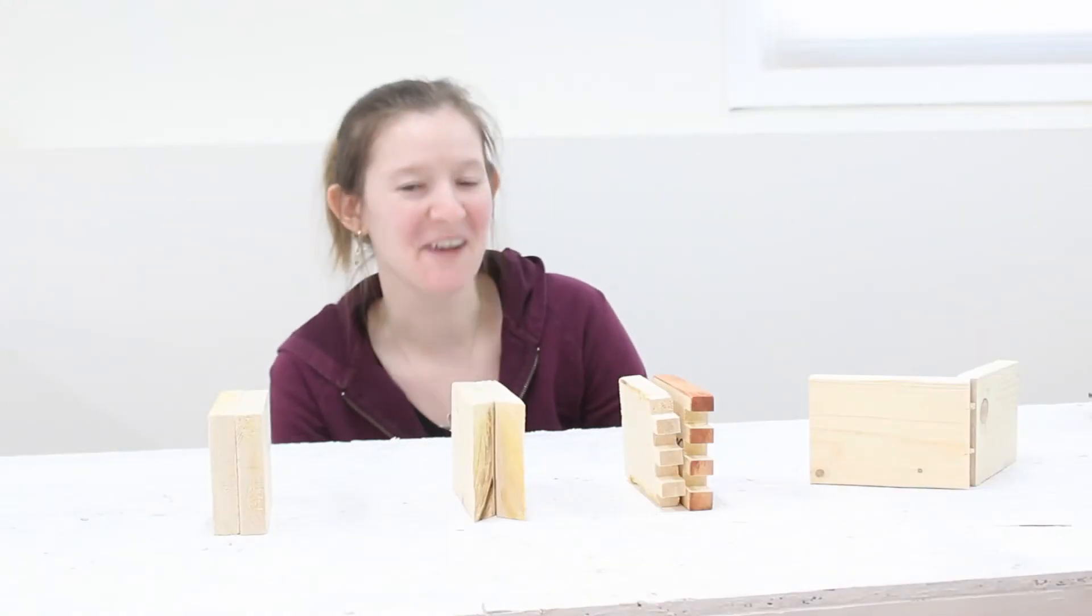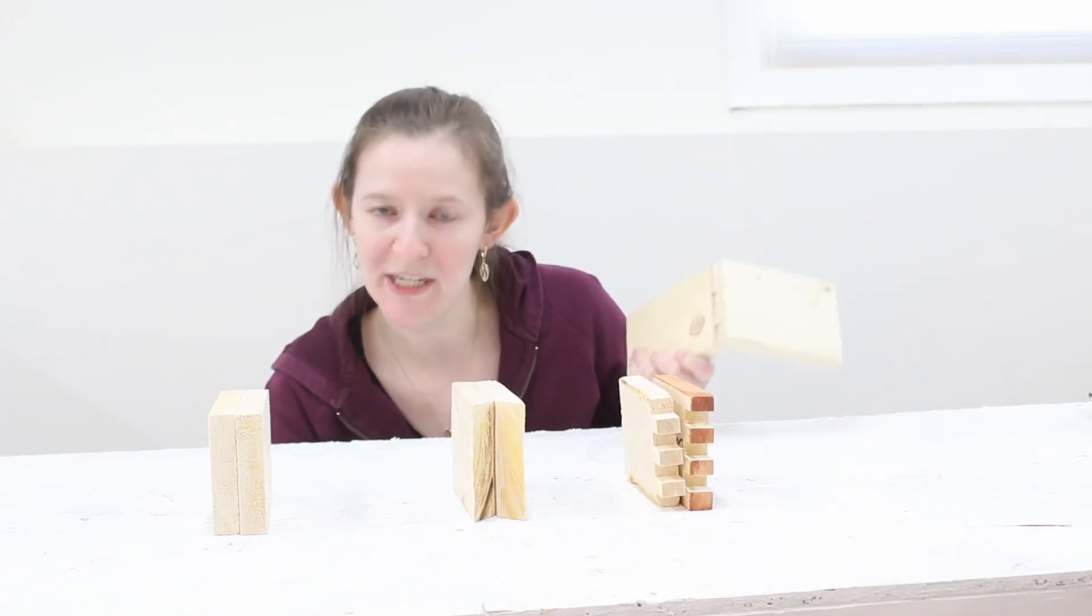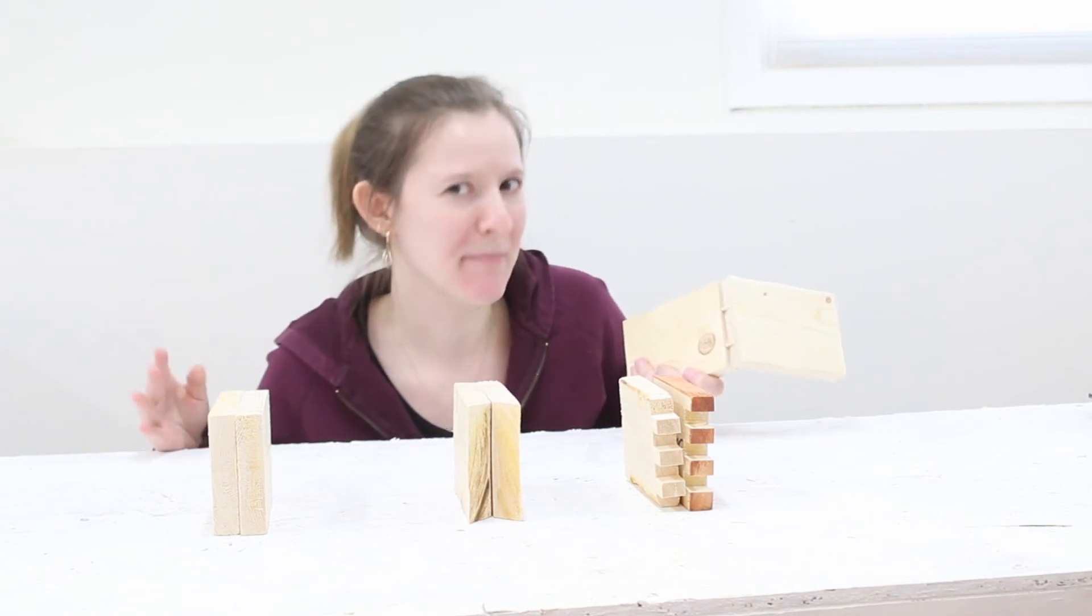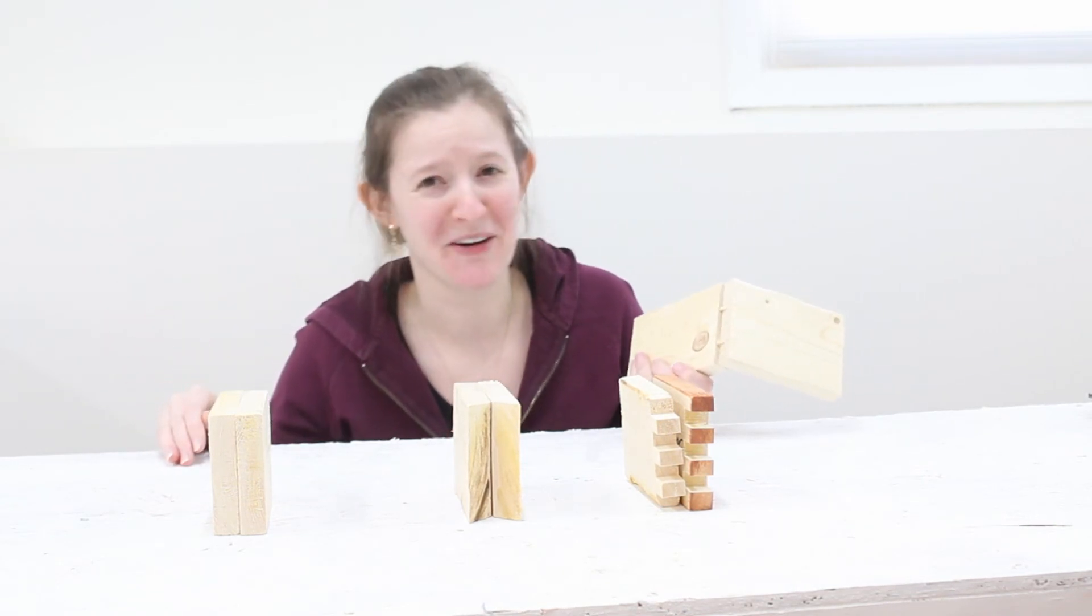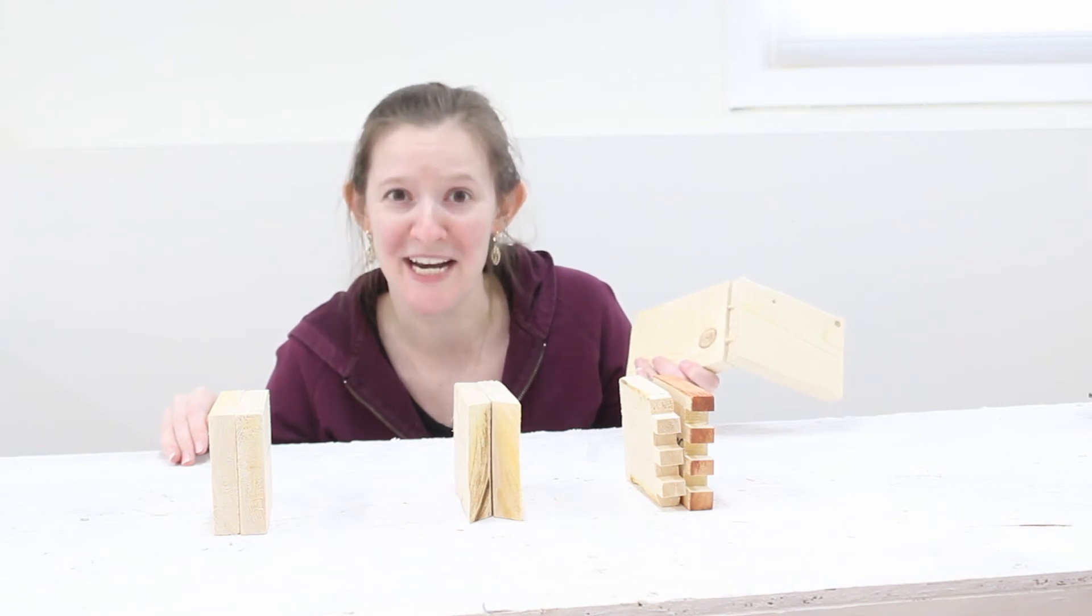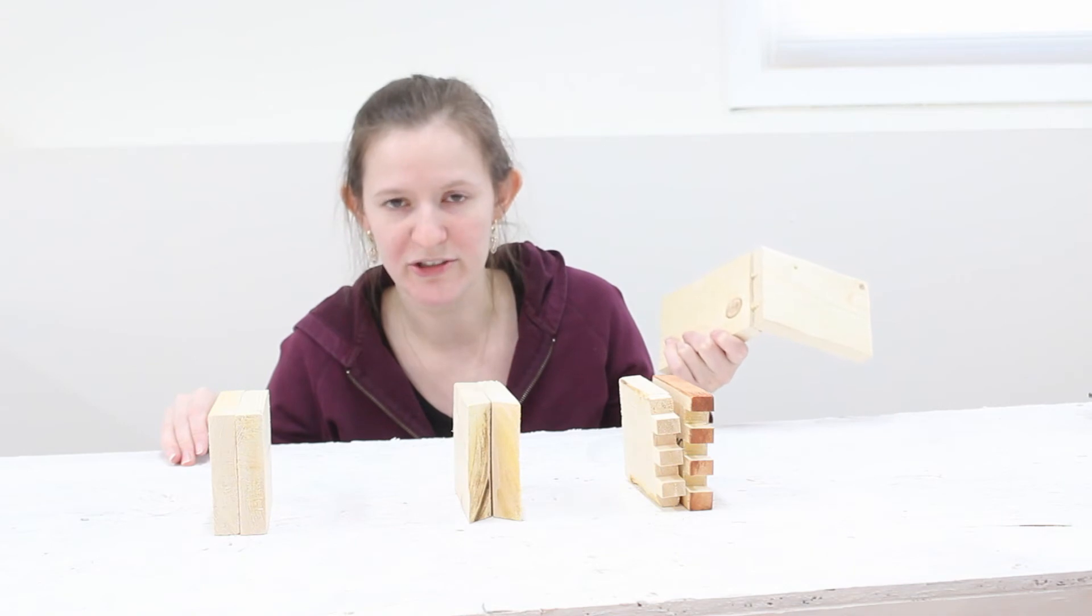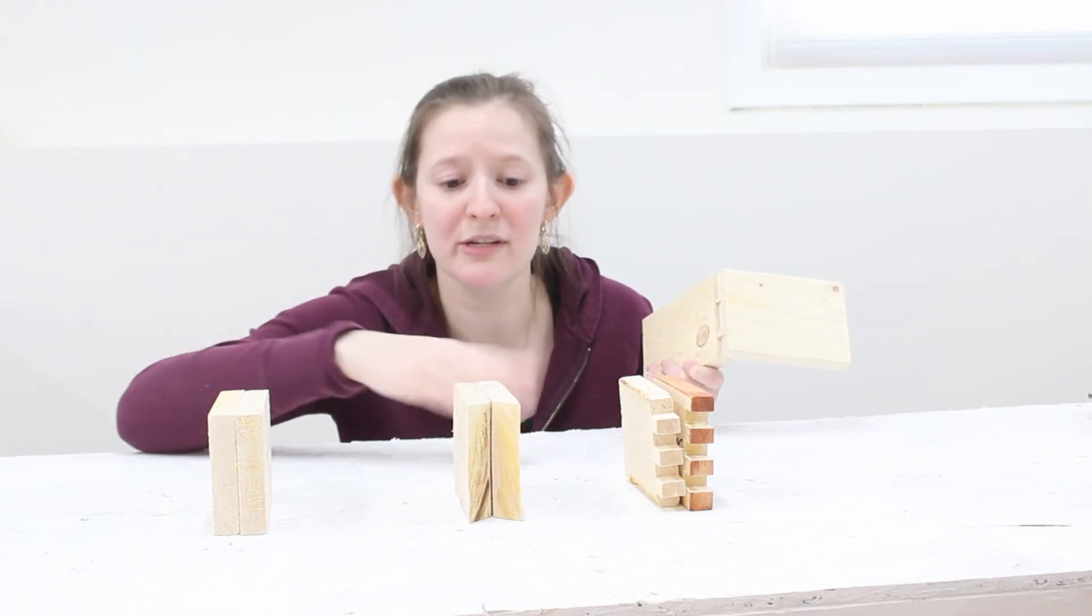All right. So first off surprises. I definitely thought that this pocket hole joint was going to be stronger than the miter joint, partly because my miter joints aren't actually that great. They're kind of ugly. They don't line up that well. They're just not that great. So I really did think that even the screws alone with the pocket hole joint would be stronger than the miter joint. And it just wasn't.